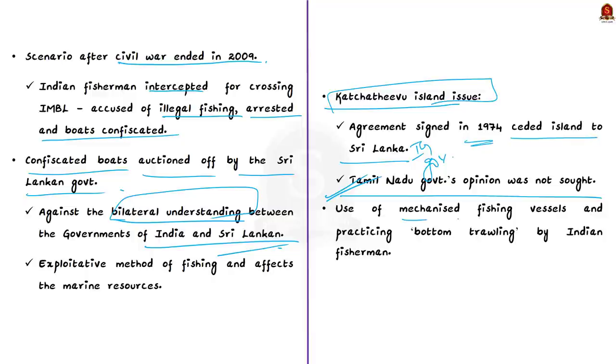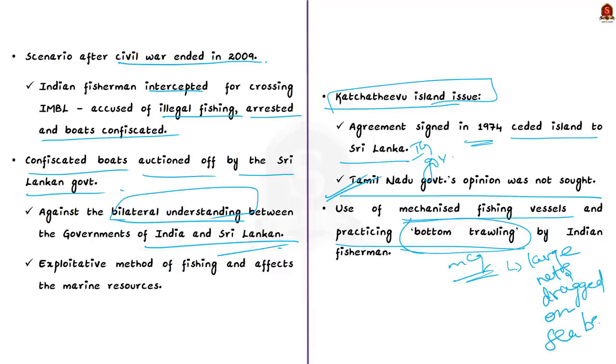Overall these affected the traditional fishing rights of Indian Tamil fishermen in the Park Bay. Along with this, certain operational issues also existed, including the use of mechanized fishing vessels and practicing bottom trawling by Indian fishermen. In bottom trawling, large fishing nets are dragged along the seabed, scooping out huge quantities of prawns and small fishes at one go. This is an exploitative method of fishing and affects the marine resources. Bottom trawling is banned in Sri Lanka.